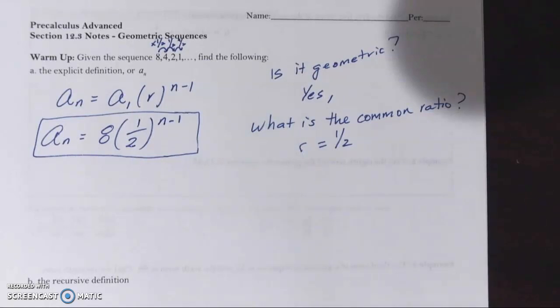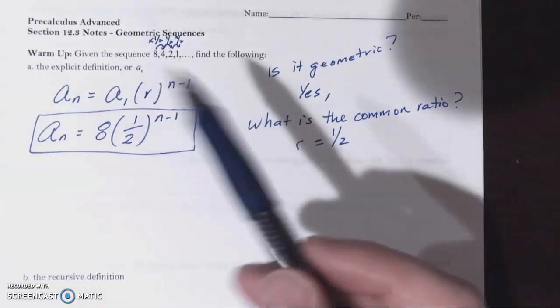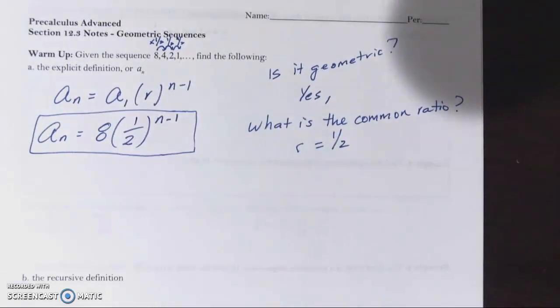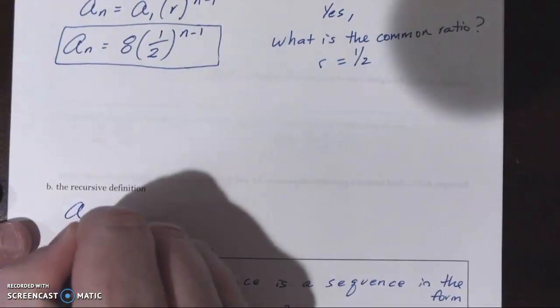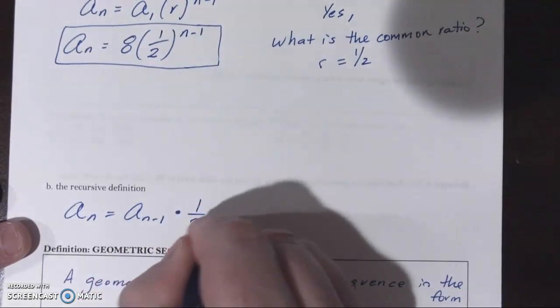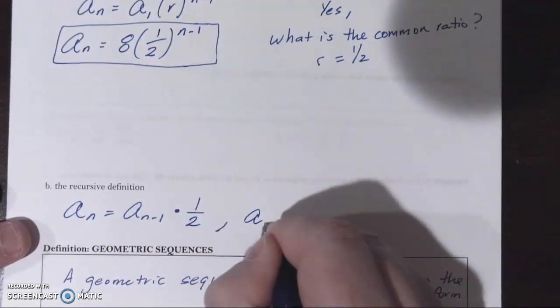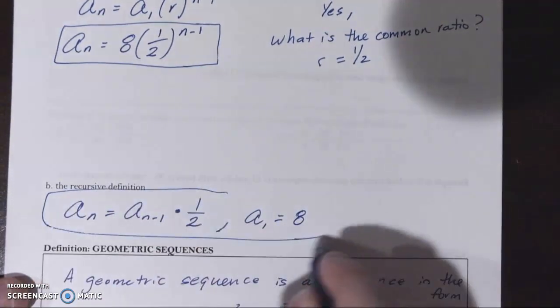If you want to test it, go ahead. Plug in a one for n, a two for n, a three for n, a four for n. You should end up with these first four terms. We're not going to do that, but you can trust me that that would happen. Recursively, we would say that the nth term is the term before it times the common ratio. But we'd also need to say that the first term happens to be eight.